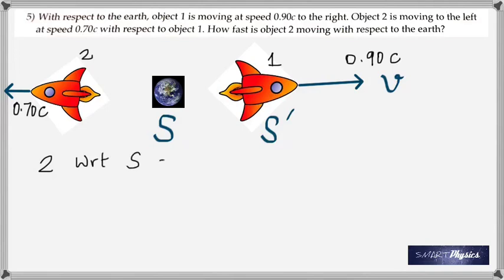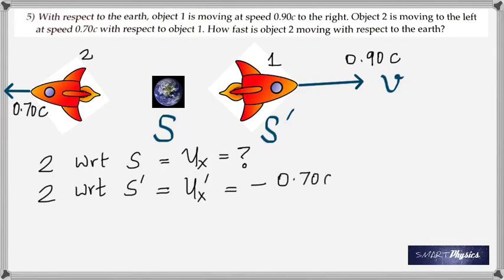While the velocity of 2 with respect to S must be labeled ux. So 2 with respect to S prime is ux prime which is going to be negative 0.70c, why? Because it's moving exactly opposite to 1. When you compare 2 with S prime, S prime is moving to the right but 2 is moving to the left.